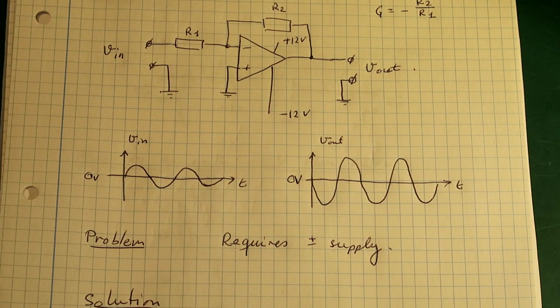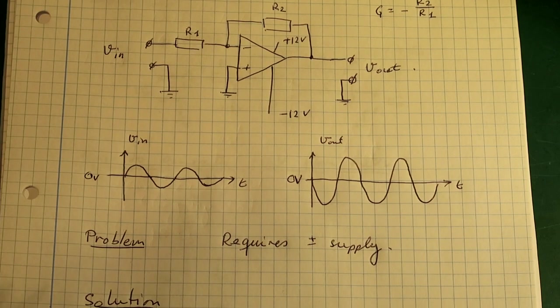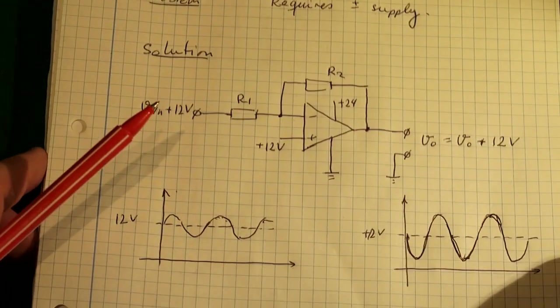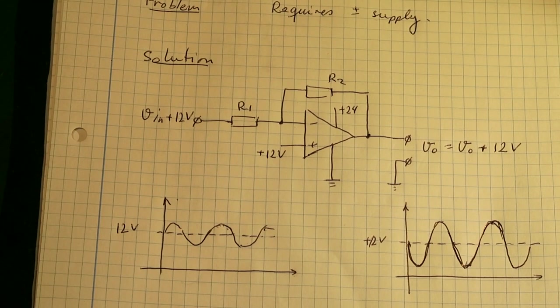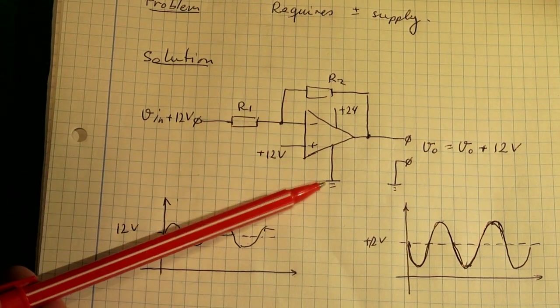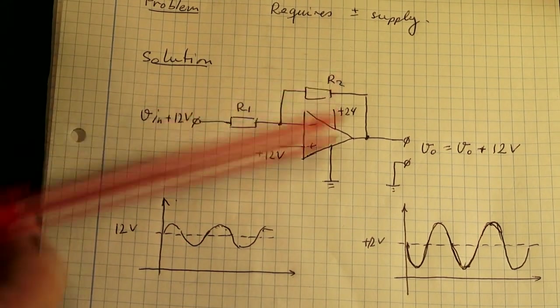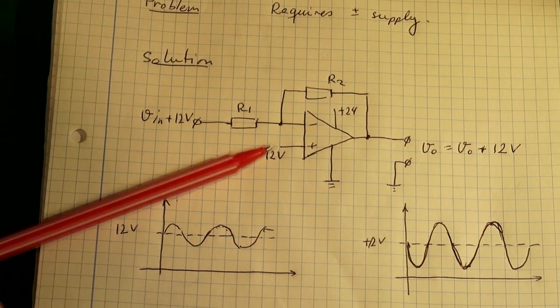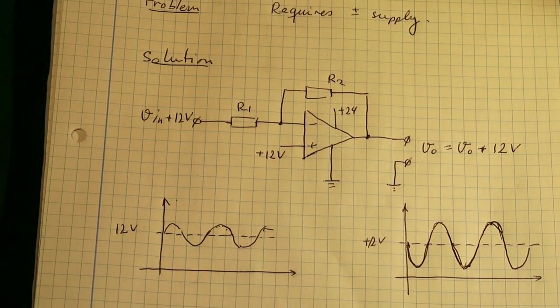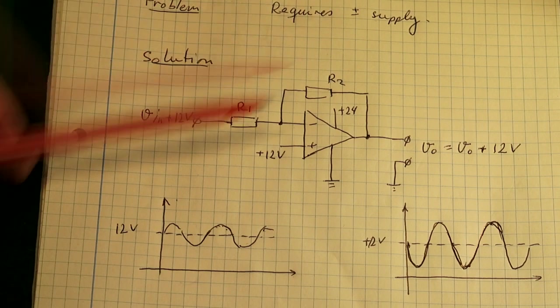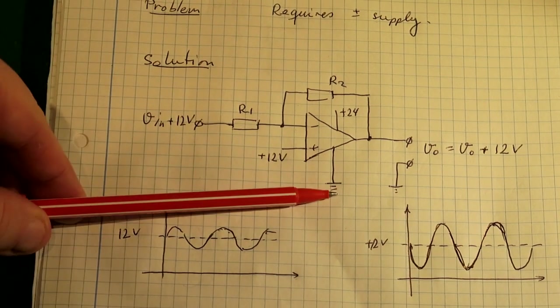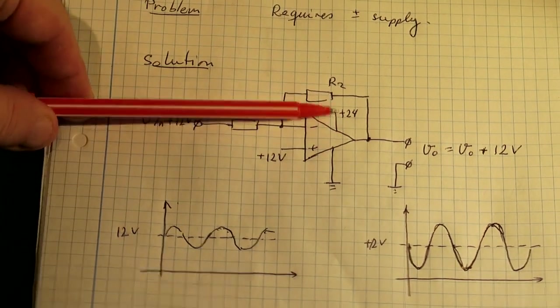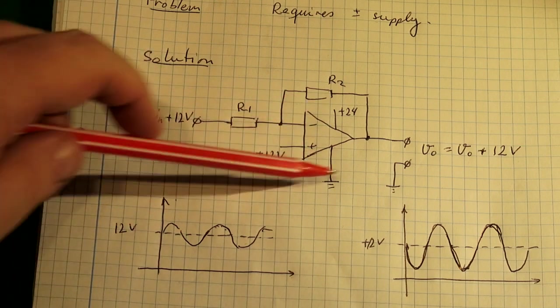But anyway the solution is fairly simple once you understand how it works. And I have drawn that down here. And basically I have now my power supply to my op amp with 24 volt here, zero volt here and plus 12 volt here. So basically I have shifted all the voltages on the operational amplifier. I have shifted it up by another 12 volt. So previously we had zero volt here, minus 12 volt here and plus 12 volt here.